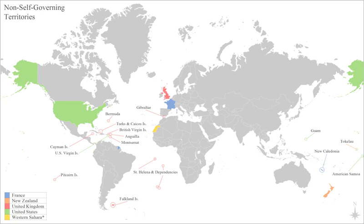The word 'colony' comes from the Latin word colonia. This in turn derives from the word colonis, which means colonist but also implies a farmer. Cologne is an example of a settlement preserving this etymology. Other less obvious settlements that began as Roman colonia include cities from Belgrade to York.